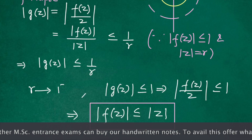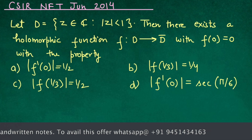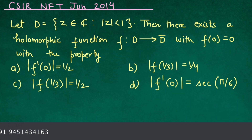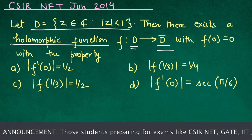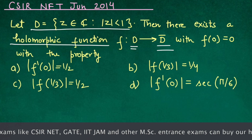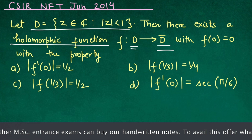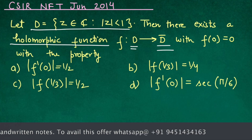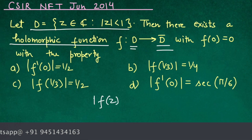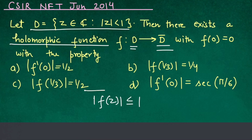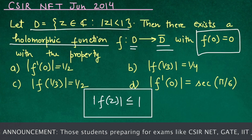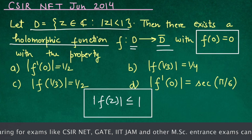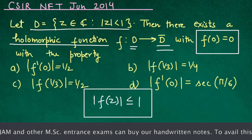Now let us see a question based on this concept. This question appeared in the CSIR NET exam June 2014. We have a unit disk D and a holomorphic function f from disk D to the closure of disk D. Since D is a unit disk, the closure of D is also a unit disk, so all images lie inside the unit disk. We can conclude that |f(z)| ≤ 1. That means the first condition is fulfilled, and the second condition is already given, so all conditions of Schwarz Lemma are satisfied and we can apply it.